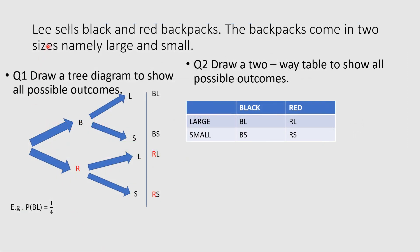For example, Lee sells black and red backpacks. The backpacks come in two sizes, namely large and small. Question one says: draw a tree diagram to show all possible outcomes. When drawing my tree diagram, the number of branches on the tree diagram is directly related to the number of outcomes. In my question, I have black and red backpacks, just two. So I'm going to have two branches on my tree diagram - one for black, and my other option is red.